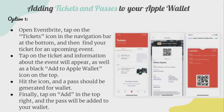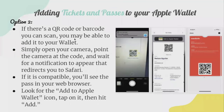If there's a QR code or barcode you can scan, you may be able to add it to your wallet. Simply open your camera and point it at the code, then wait for a notification to appear that redirects you to Safari. If it is compatible, you will see the pass in your web browser. Look for the 'Add to Apple Wallet' icon, tap on it, then hit Add.